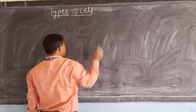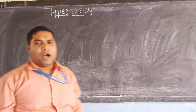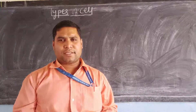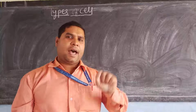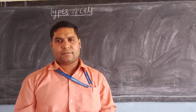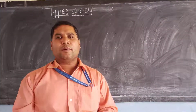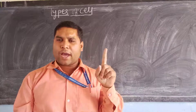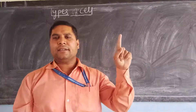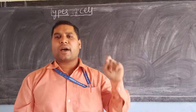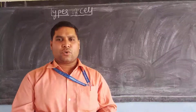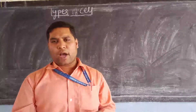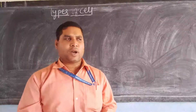Dear students, according to the presence or absence of the nucleus, cells are mainly of two types: prokaryotic and eukaryotic. So let us know what do you mean by prokaryotic and eukaryotic.